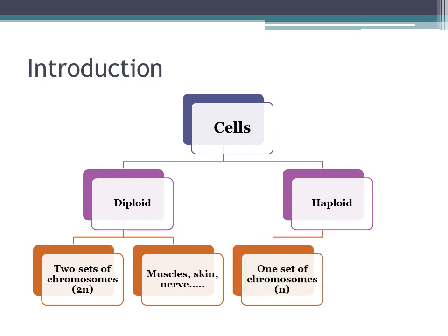Haploid cells are those cells which have only one set of chromosomes in their nuclei. One set of chromosomes is symbolized by only one N. The only two types of haploid cells are sperms and ova.